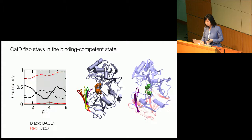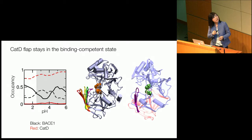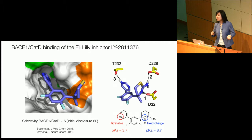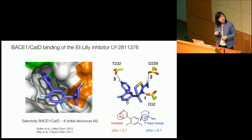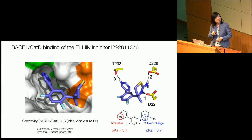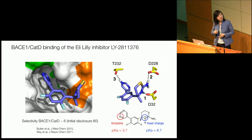Now let's bring on the off-target catepsin D, which is very similar in structure — they are like twins. But if you look at the dynamics, it turns out this flap is rigid, shown here in dashed lines, and it's always in the binding-competent state. Looking at their binding mode with the Lilly inhibitor compound, the binding mode is identical. We have the aspartoid binding motif consisting of two amine groups forming charged hydrogen bonds and salt bridges with the two aspartate residues. On the other side of the inhibitor, we have a pyrimidine ring, which can form a hydrogen bond with the threonine group in the S3 pocket.